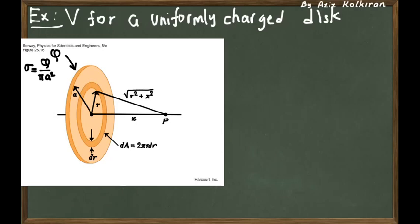So before that, let's express the surface charge density of the disk as the total charge divided by the surface area, pi a squared.